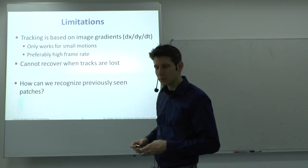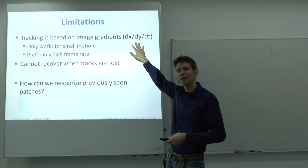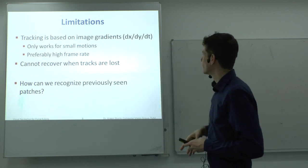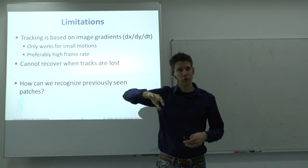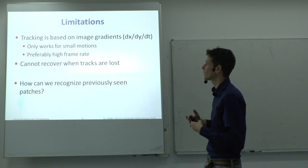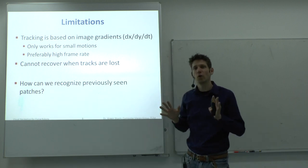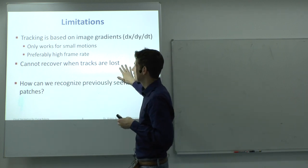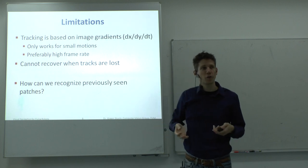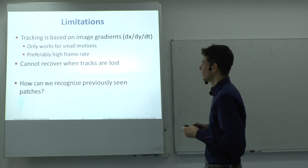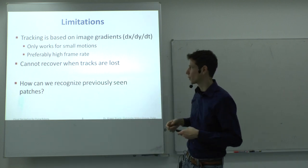However, the KLT tracker is based on image gradients — it computes x and y derivatives and the temporal derivative — so it only works for small motions, requiring a high frame rate camera where the difference between two images is relatively small. A key problem is that when you lose a track, you can't recover it afterwards with KLT. This means that if you make mistakes as you go, you can't correct for them.